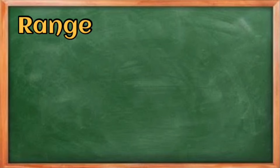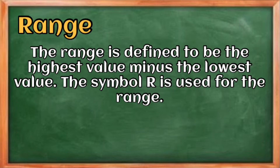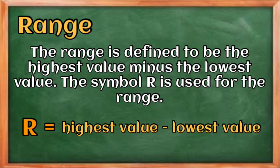One simple measure of variability is the range. The range is defined as the highest value minus the lowest value. The symbol R is used for the range, so we have: Range = Highest Value − Lowest Value.